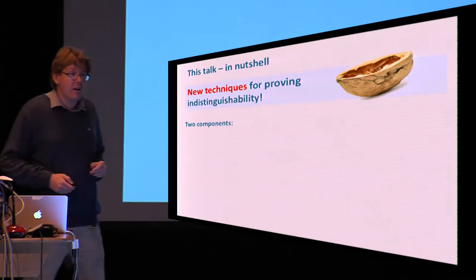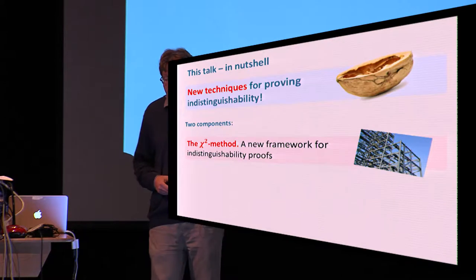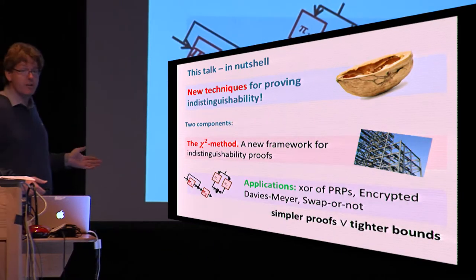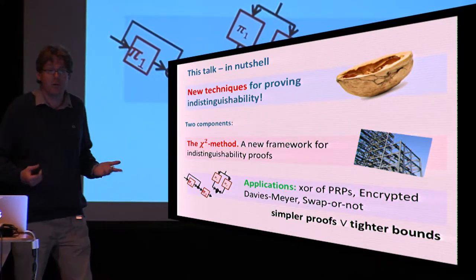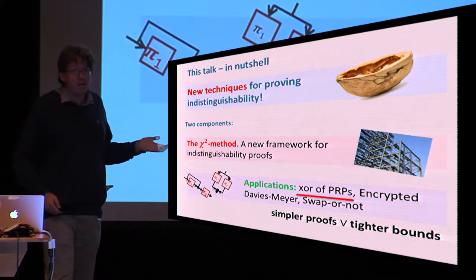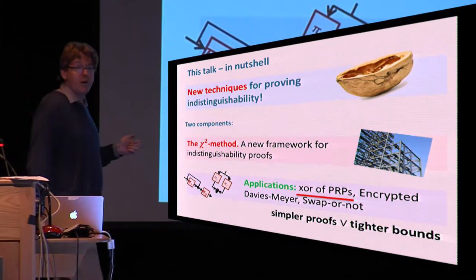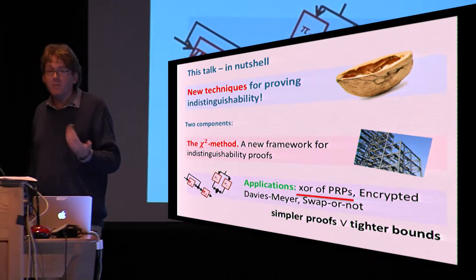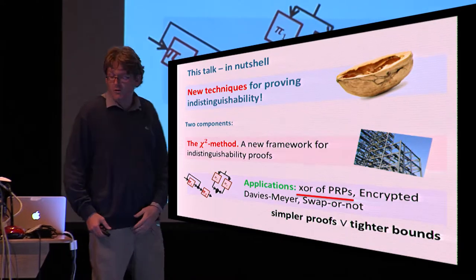We have two contributions. The first one is a new framework which we call the chi-square method for indistinguishability proofs, which is then applied to a number of constructions that we analyze for which we obtain not only simpler proofs but often tighter bounds. For time reasons, I'm going to focus on one of these constructions, which is the XOR of pseudorandom permutations. It's a very simple construction which has eluded a simple analysis for almost two decades to date, and hence it's a great test case for our framework.